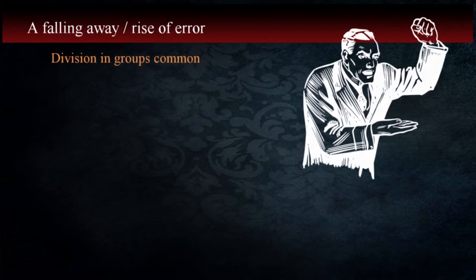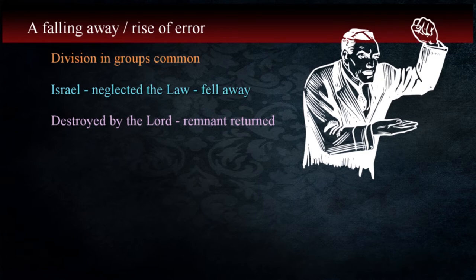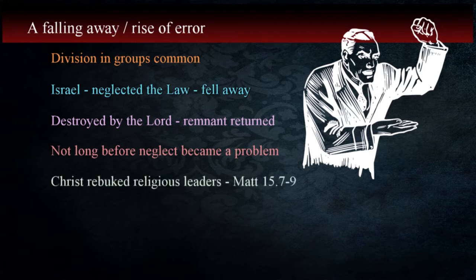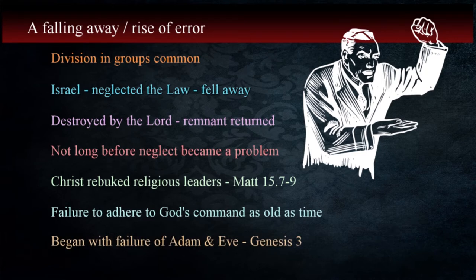In the history of the world, we can't find an example of a group of humans who didn't have problems and eventually divided over differences of opinion. The kingdom of Israel was given a law which was placed in the hands of God's people. Over time, these people neglected the law, drifted into idolatry, and eventually were destroyed by the Lord. A remnant was allowed to return and resettle the nation for the purpose of bringing the Messiah into the world. It wasn't long, however, before they fell into neglect and were rebuked by Malachi. During the first century, Christ rebuked the religious leadership for teaching doctrines not sanctioned by God in Matthew 15:7-9. Failure to adhere to God's commands is as old as time and began with Adam and Eve who disregarded the Lord's directive not to eat the forbidden fruit in Genesis chapter 3.